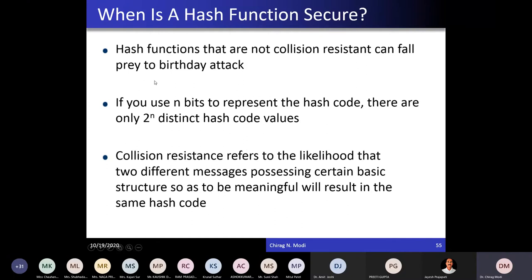When are hash functions secure? If hash functions are not collision resistant, then they will fall under a birthday attack. The birthday attack states that if you use N bits to represent the hash code, you have 2^N distinct hash values. Since the hash code size is smaller than the message size, if you are using an N-bit message you can produce 2^N different kinds of messages, and with an N-bit hash value you can produce 2^N distinct hash values.